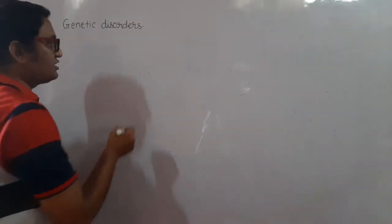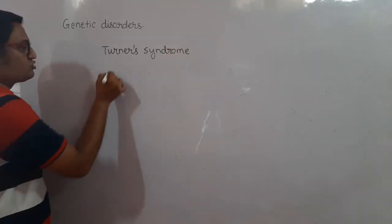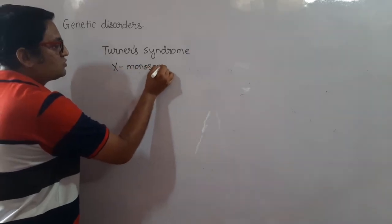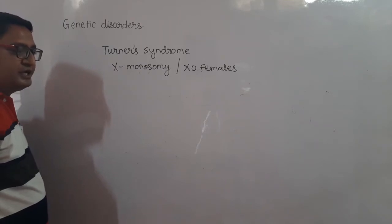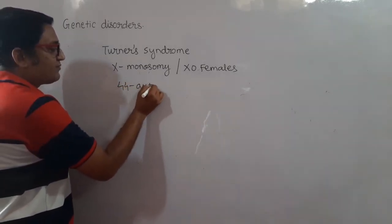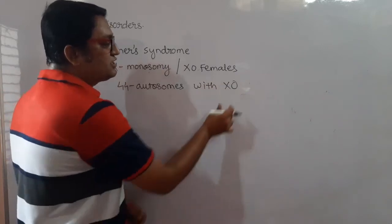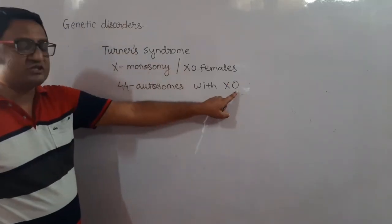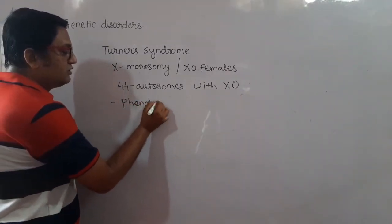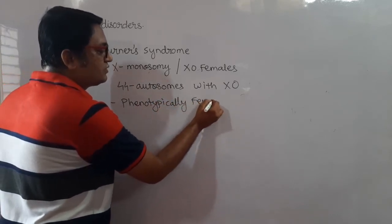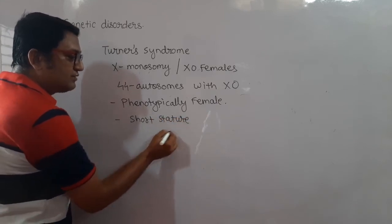Next we study Turner syndrome. Turner syndrome is called X monosomy, or XO females. These individuals have 44 autosomes, but one sex chromosome is absent — instead of two sex chromosomes, there is only one X, so the karyotype is 44+XO. The second sex chromosome is absent. Phenotypically, they present with short stature.